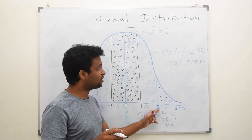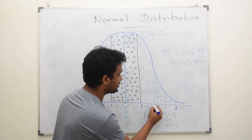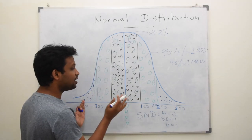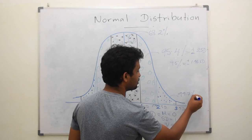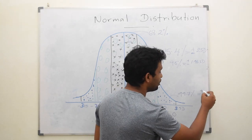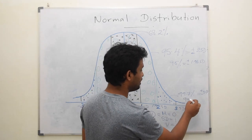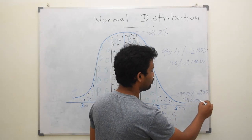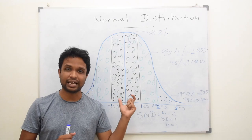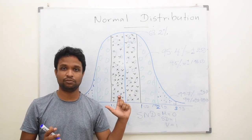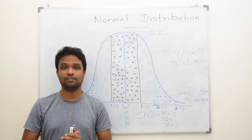For the moment, keep in mind: 2SD corresponds to 95.4%, and 1.96SD corresponds to 95%. Mean plus or minus 3SD covers 99.7%. So what about 99%? That is actually mean plus or minus 2.59 standard deviations. Standard normal distribution is a special shape of normal distribution where mean is 0 and both variance and standard deviation are 1.